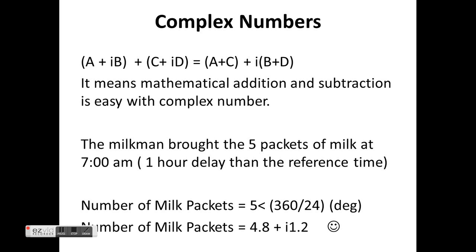Continuing the same story: the milkman brought five packets of milk at 7 a.m., which is one hour delay from the reference time. The number of milk packets, earlier presented in phasor form as five angular 360 by 24 degrees, can be equivalently expressed as a complex number: 4.8 + i1.2. Such figures are easy to work with for addition and subtraction when expressed in complex number form.